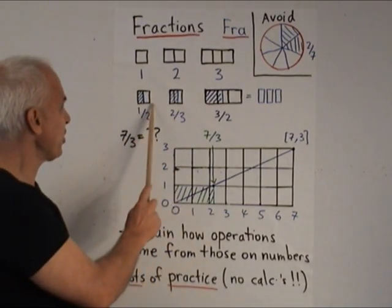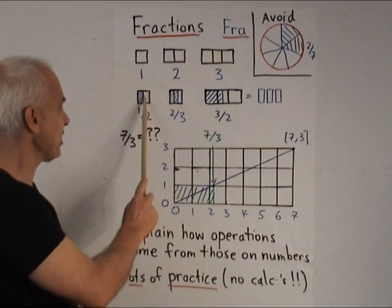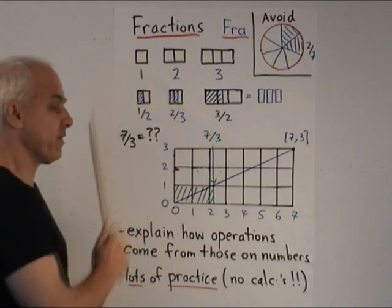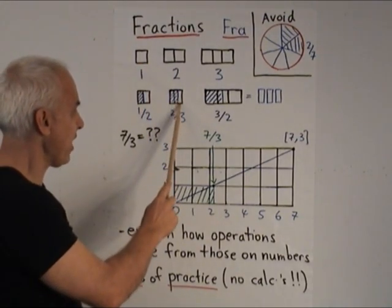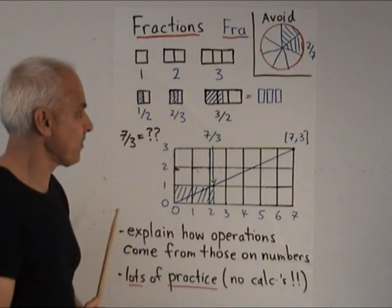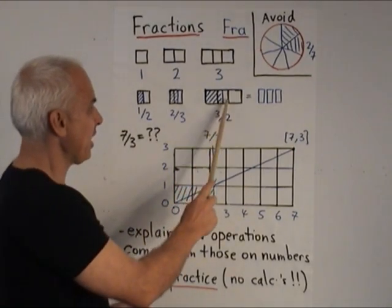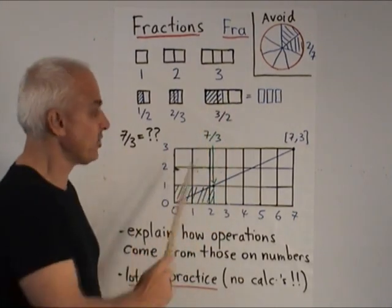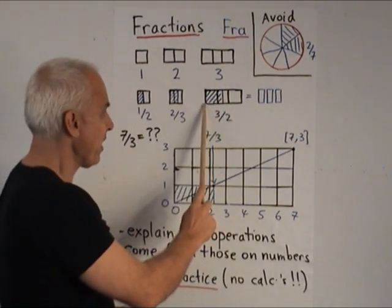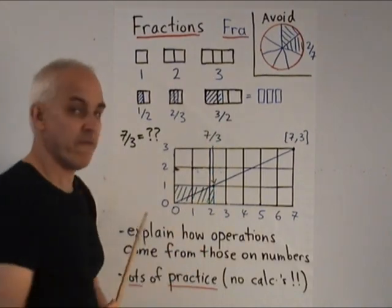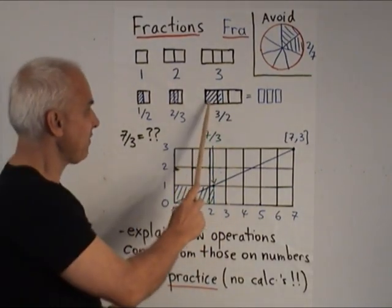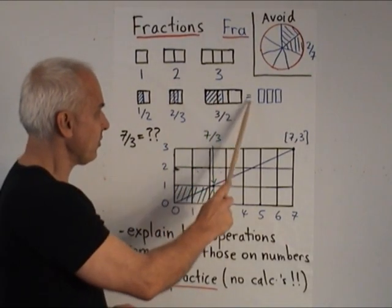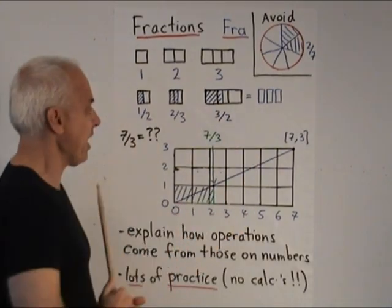So this fraction 1 half can be conveniently represented by taking a half of one of these little squares. Or 2 thirds, dividing it into 3 and taking 2 thirds. Here for example are 3 squares. That would be the number 3. And the number 3 over 2 would be represented by that portion of that. And you can see physically that that is equal to 3 halves that we had there.